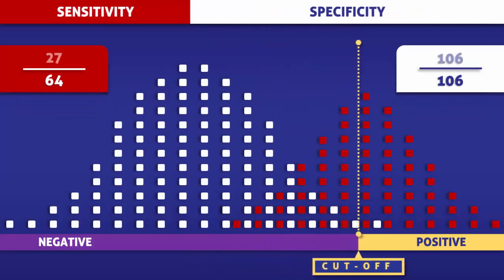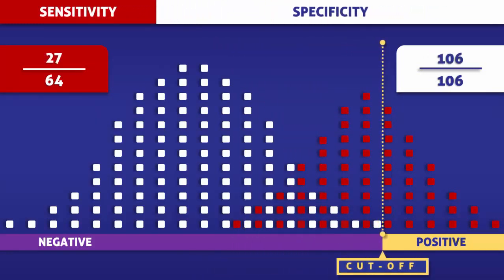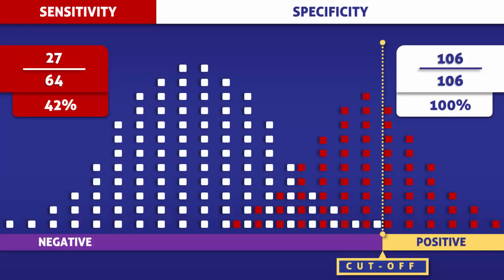By shifting the cutoff level to the right, we find that all the white squares are now to the left of the yellow line. This means that everyone without the disease would test negative, and thus the specificity of the test would be 100%. However, the number of red squares to the left of the cutoff line has also increased, meaning more people with the disease would incorrectly test negative and the sensitivity of the test would be lower. So at this cutoff level, there would be a greater number of negative tests, both true and false, which would lead to a higher specificity but a lower sensitivity.